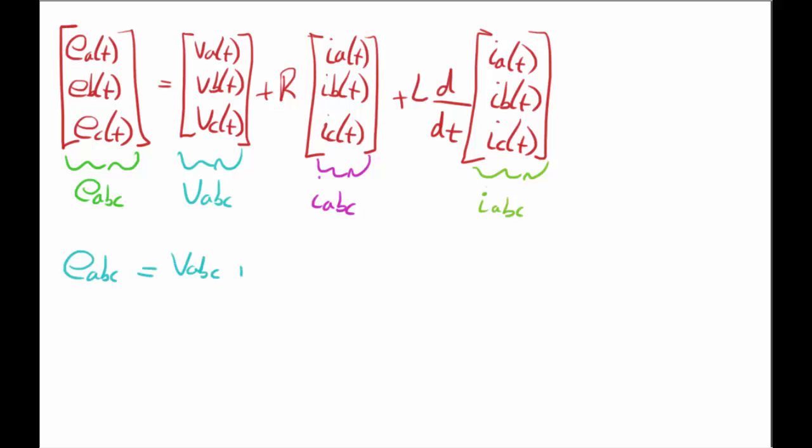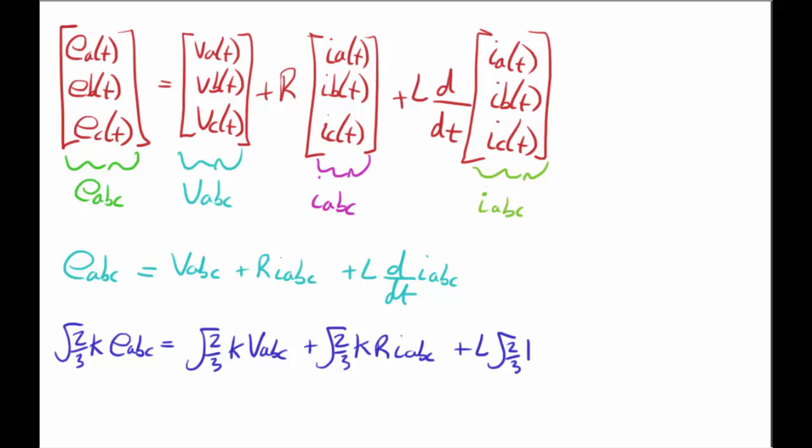So you can write the entire thing as this. This is just to save space. I see sometimes notation written as this but I really don't like it. But just to save space I did it. And then multiplying on the left side by root 2 over 3, the square root of 2 over 3 multiplied by that K transformation matrix on the left by everything in that circuit equation.